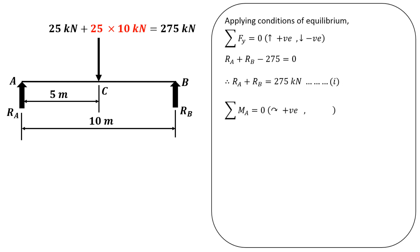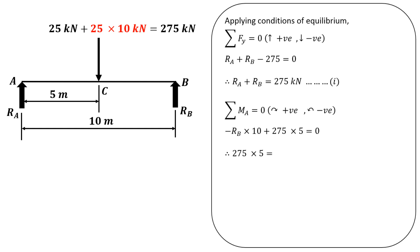Next, we take moments about point A, considering clockwise as positive and anticlockwise as negative. The reaction Rb produces an anticlockwise moment about A, so it is minus Rb multiplied by the perpendicular distance of 10 meters. The 275 kilonewton point load produces a clockwise moment about A: 275 multiplied by 5 meters (the distance from C to A). Ra passes through point A so it produces no moment. Transferring the negative term gives Rb = 275 × 5 ÷ 10 = 137.5 kilonewton.